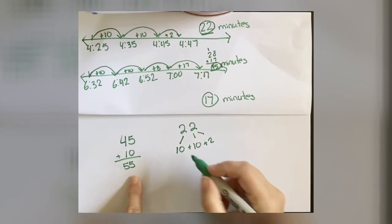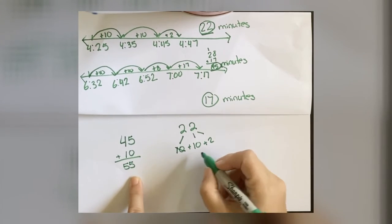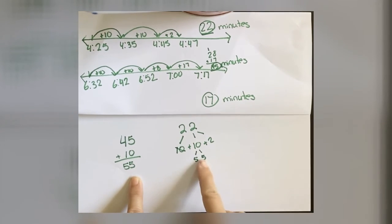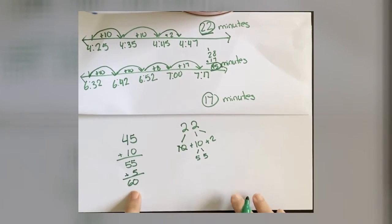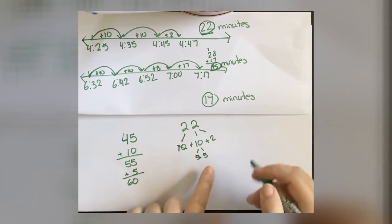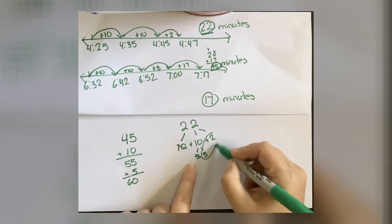Okay, so if I take 10 minutes here, that brings me up to 55. Okay, I know that I can only add 5 more minutes here, so I want to take 5 from here. And now that gives me one hour. Okay, I use this 5, so I still have 5 and 2 left.